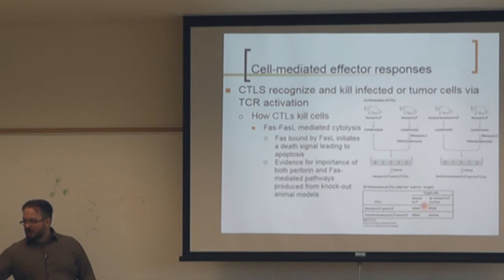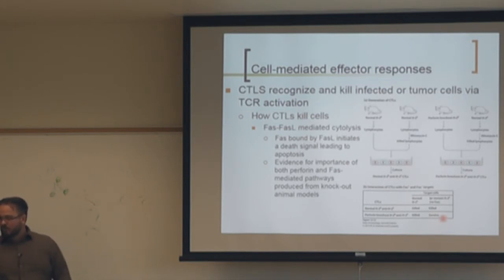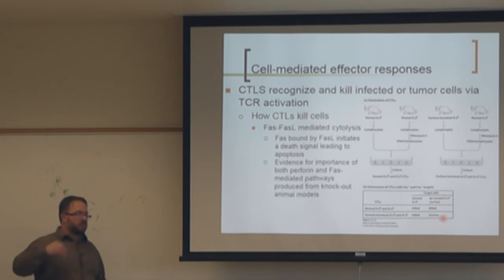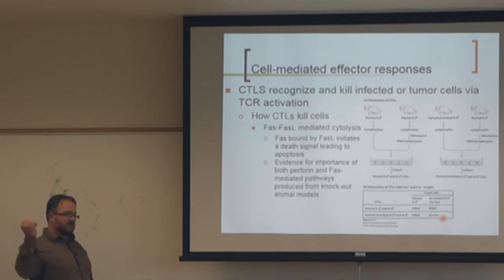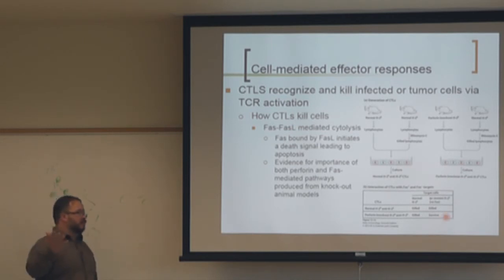In the MLR knockout experiments, knocking out perforin alone still permits killing. Only when you knock out both perforin and block FAS/FAS ligand do the target cells survive. This confirms both mechanisms contribute to killing, and T cells have evolved these two pathways as redundant systems.